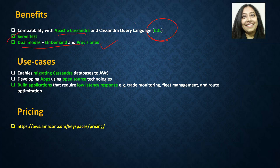Use cases include migrating Cassandra workloads to AWS, developing apps using open source Cassandra technology, and developing applications that require low-latency responses — such as trading applications, fleet management, or route optimization.